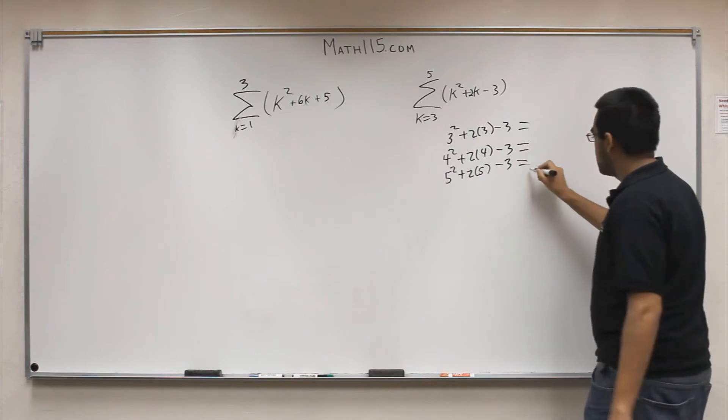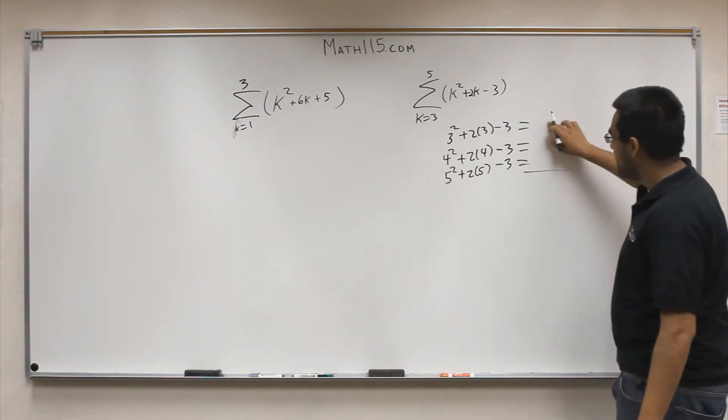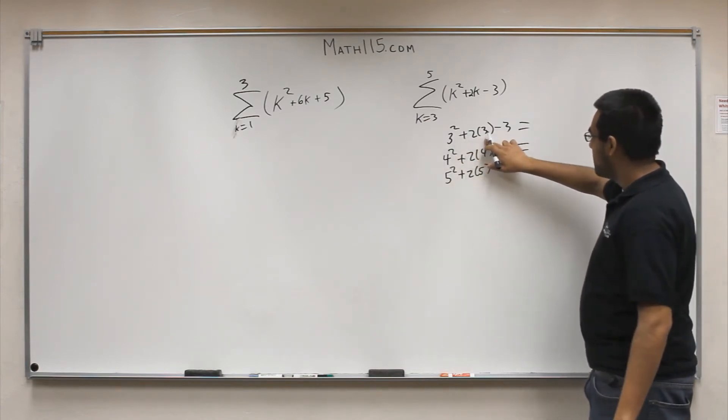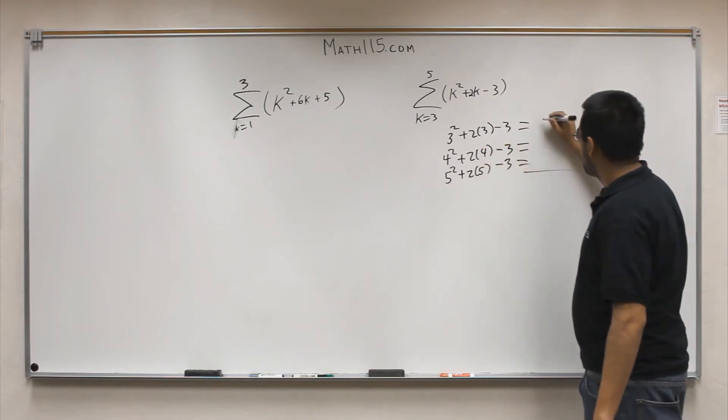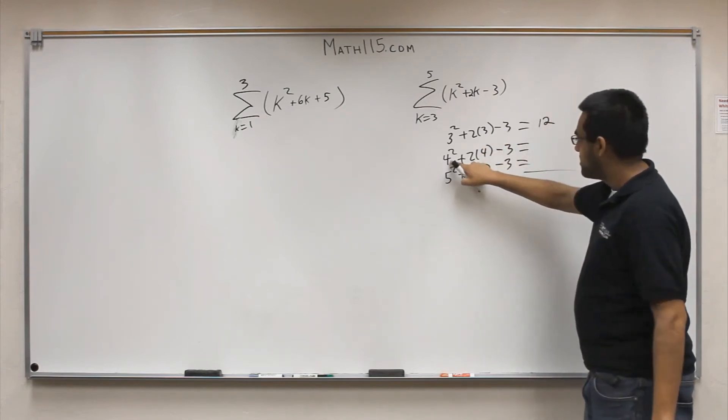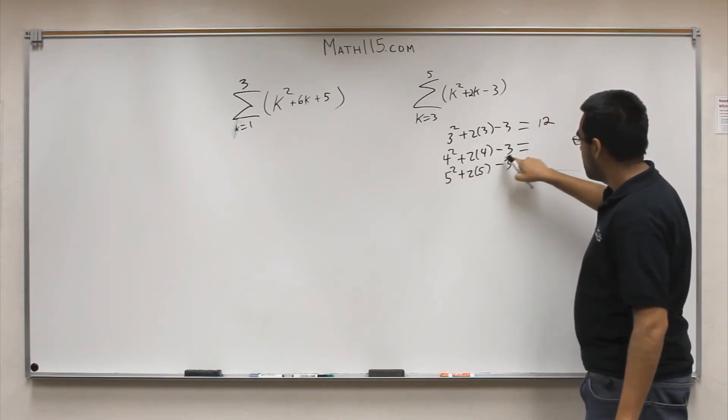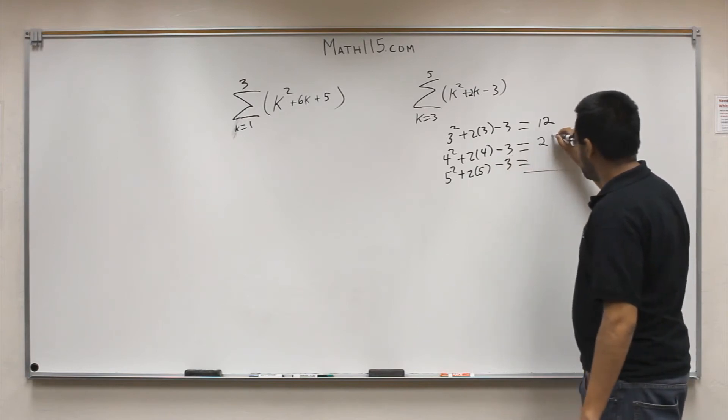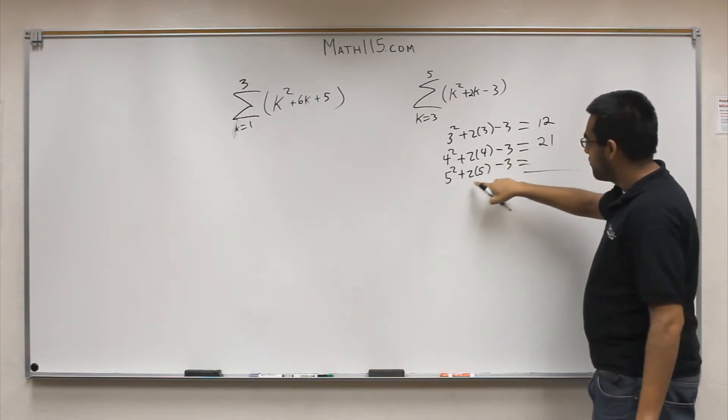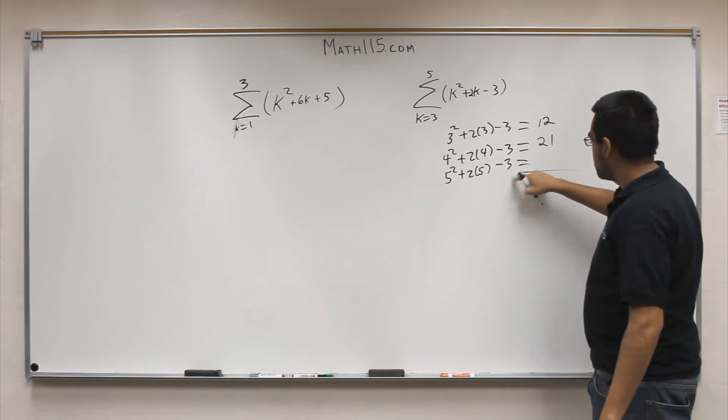So those are the three things that we need to sum together. So let's go ahead and get these answers. So this is 9 plus 6 is 15 minus 3 is 12. This is 16 plus 8 is 24 minus 3 is 21. This is 25 plus 10 is 35 minus 3 is 32.